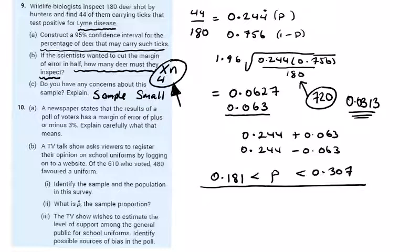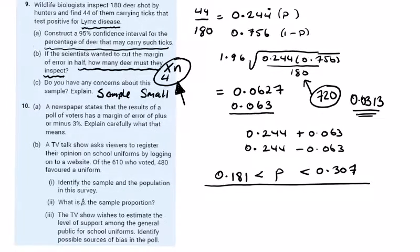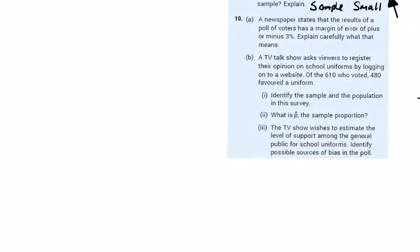We multiply n by 4, our sample size here wants to be 720 to cut this margin of error in half. With the sample, well we don't know much about where they shot the deer, Lyme disease in the herd, what age the deer were, all this kind of stuff. There's loads of concerns with the sample. Make your own up and make them sound realistic to some sort of mathematical question.